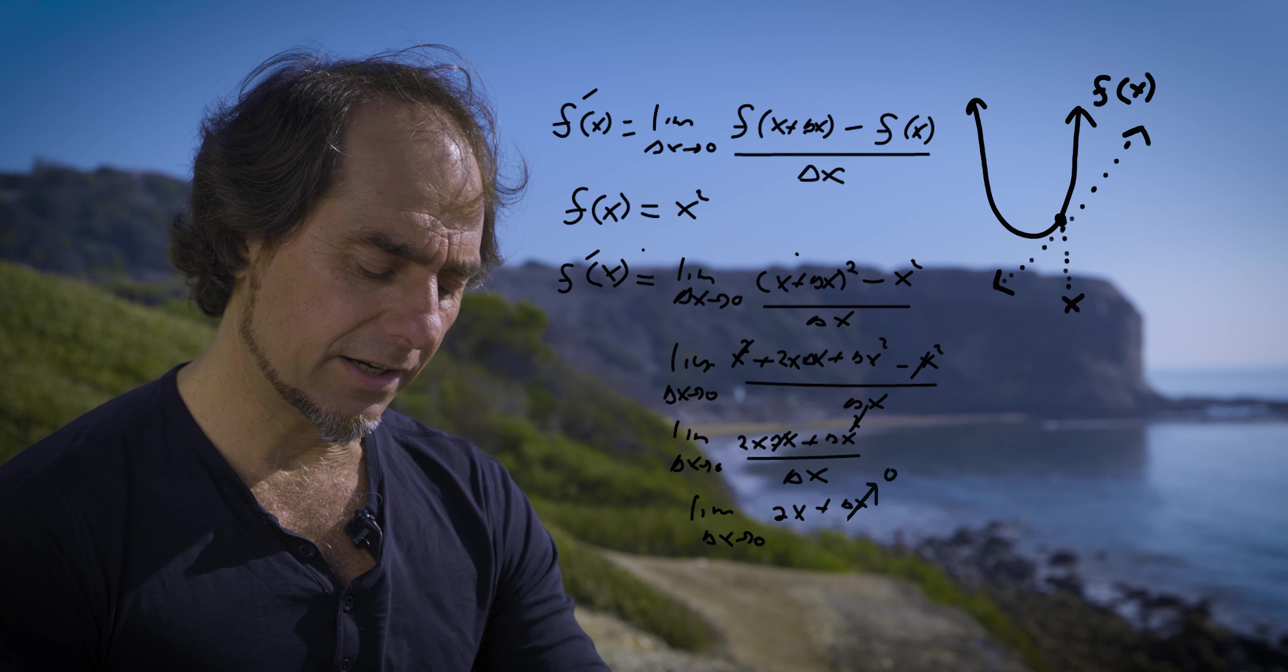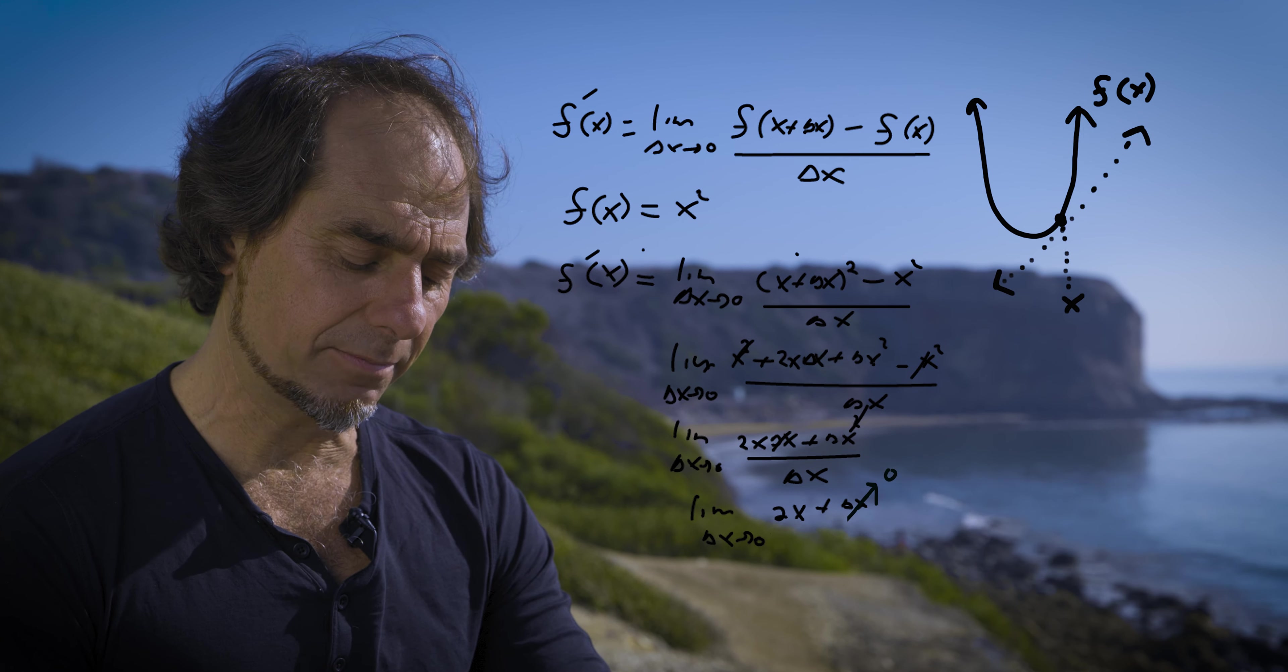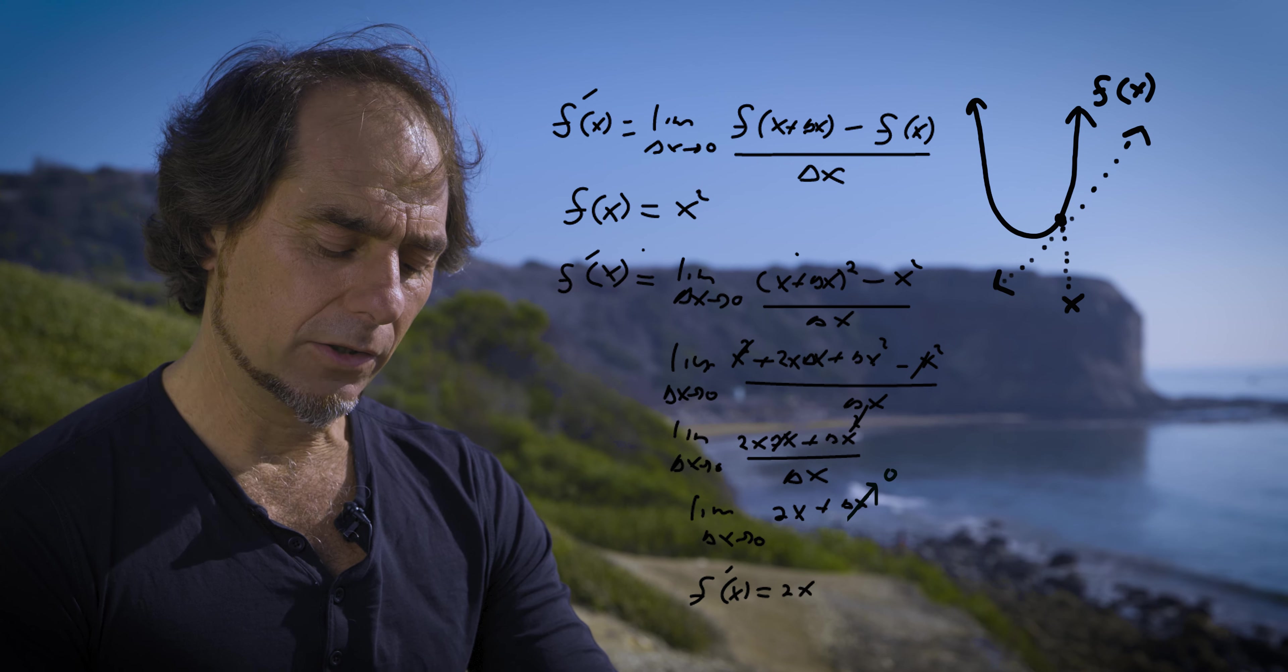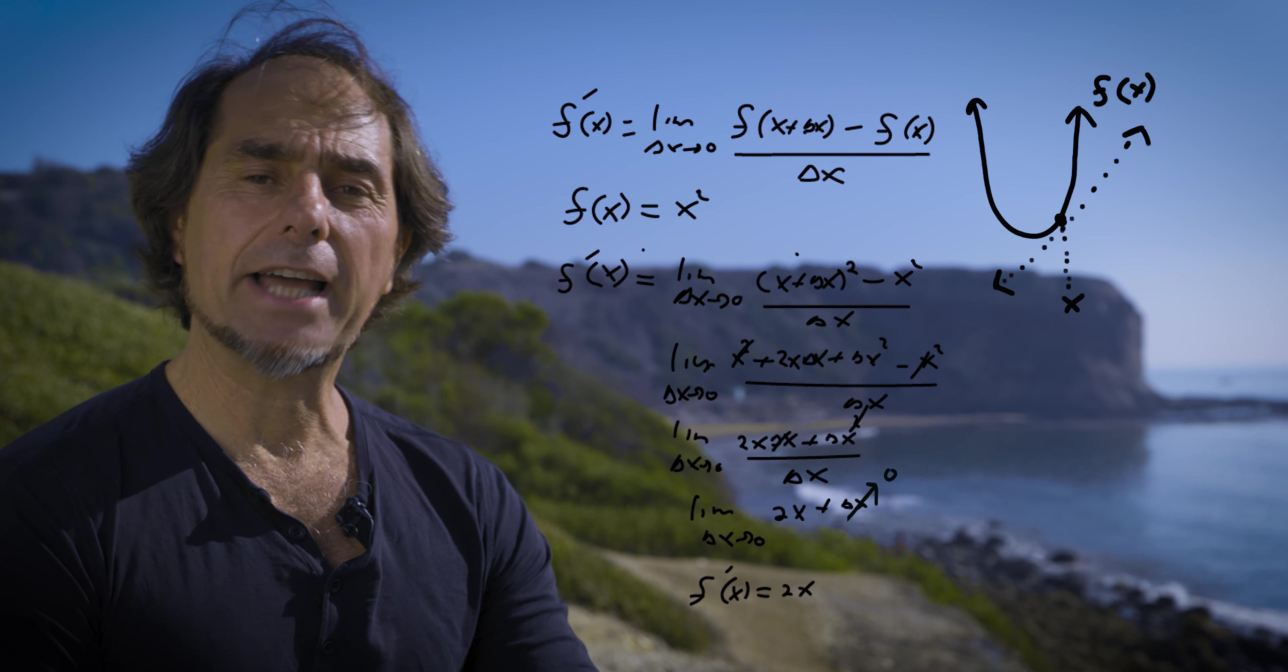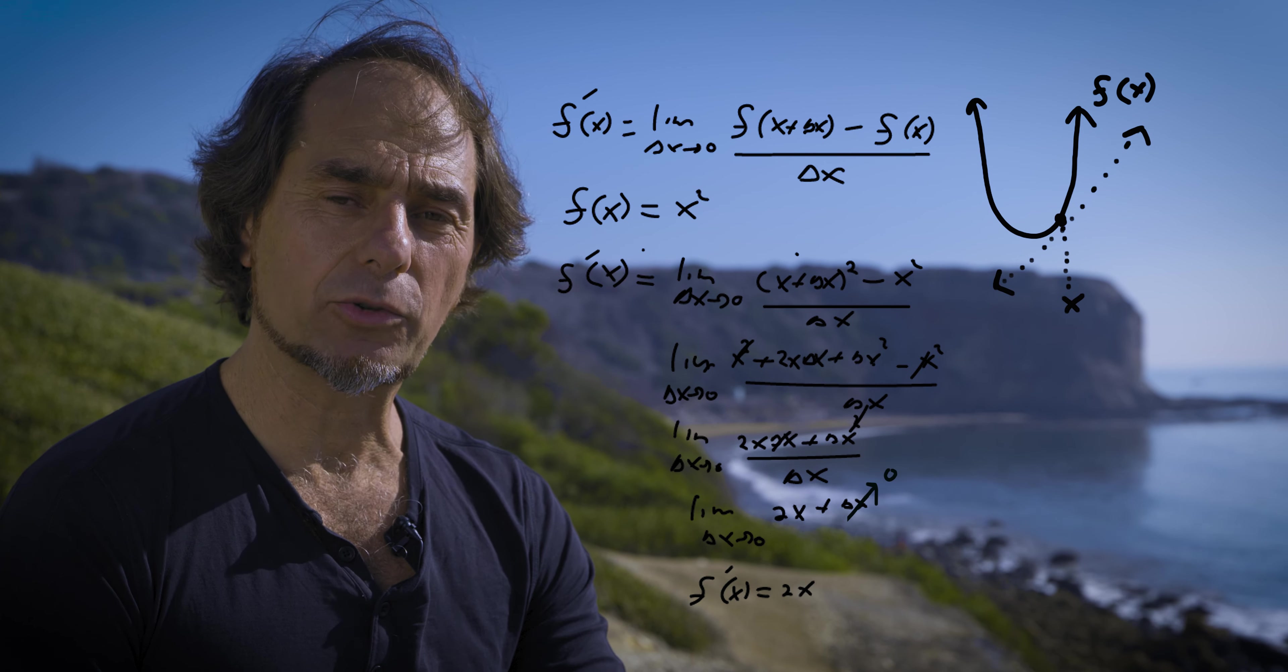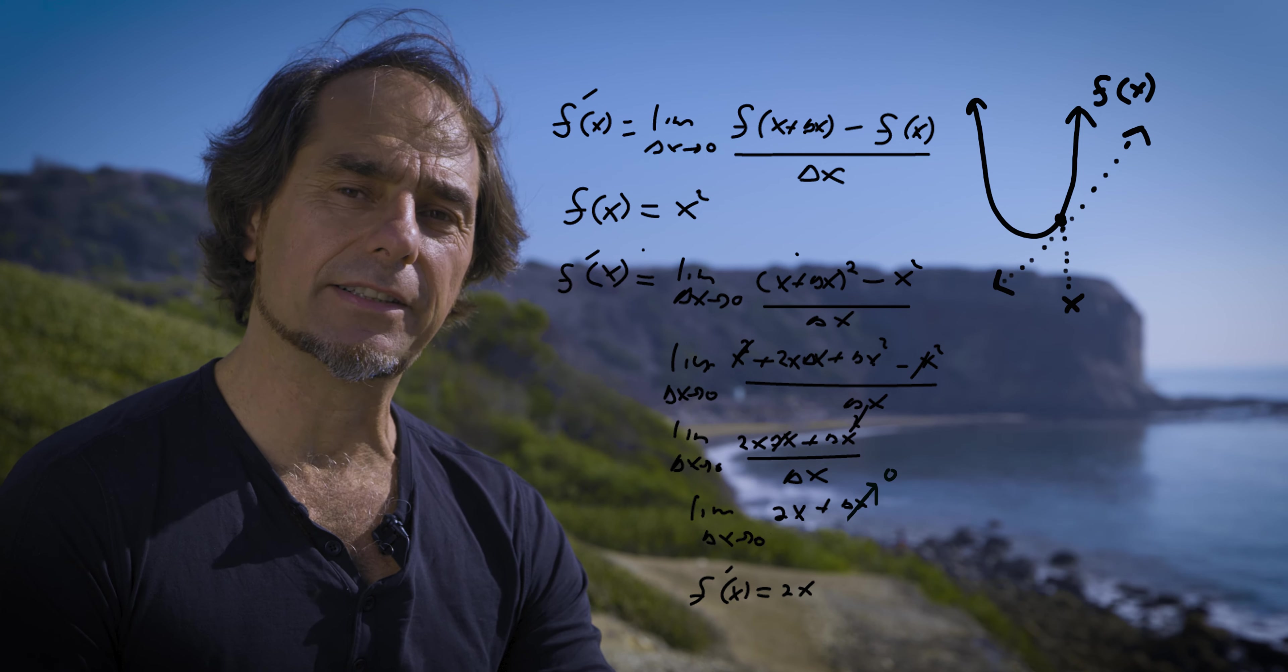Therefore, my derivative of x squared is going to be f prime is equal to 2x. And that is the derivative of x squared using the limit definition of the derivative.